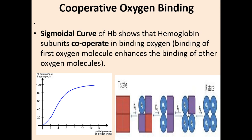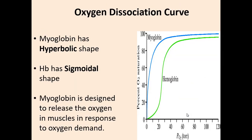The sigmoidal shape of the hemoglobin curve occurs because of its quaternary structure and the conversion from tense state to relaxed state in successive subunits, increasing the affinity of hemoglobin towards oxygen. In contrast, the oxygen dissociation curve of myoglobin is hyperbolic in shape. Myoglobin can bind only one molecule of oxygen because it contains only one heme group in a single polypeptide chain.